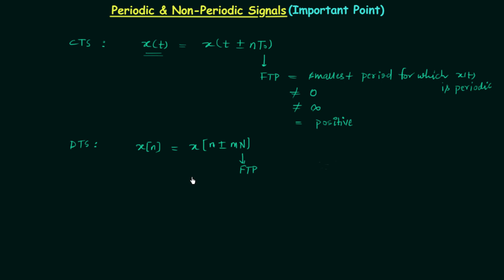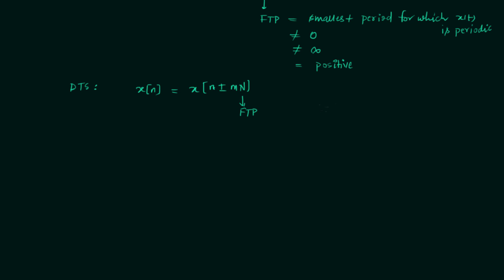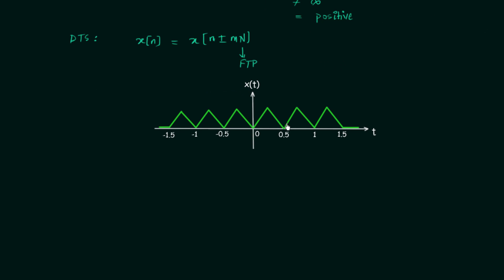There is one very important point we need to add to the definition of periodic and non-periodic signals, and we will understand this through an example. We will use the condition of periodicity to prove whether the signal x(t) is periodic or not. Looking at this waveform, according to the definition, if the signal repeats itself after a regular interval of time it is periodic with a fundamental period T0.